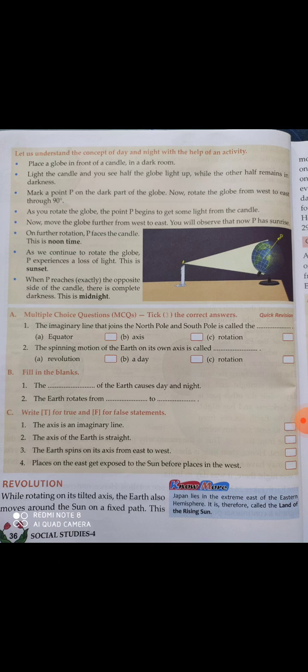Now let's learn about revolution. The earth revolves in two ways: first, it revolves on its own axis — which gives us day and night. Second, it also revolves around the sun. While rotating on its tilted axis, the earth also moves around the sun on a fixed path.